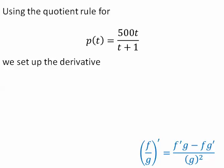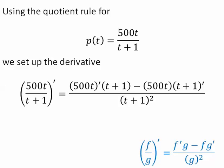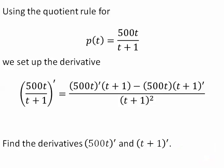Using the quotient rule for p, we need to set up the derivative. Once we set up the derivative, it looks like this: the derivative of the first times the second minus the first times the derivative of the second all over the second squared. Find the derivatives of 500t and t plus 1.